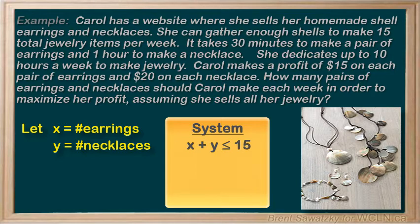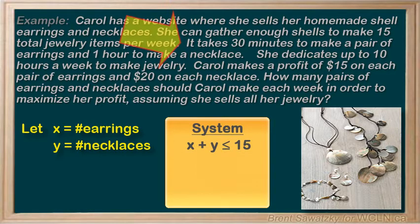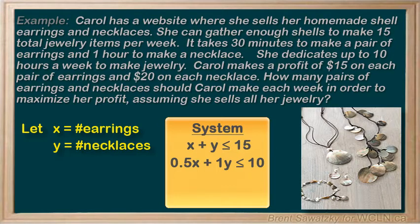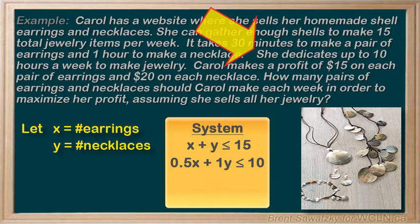We're also told that it takes 30 minutes to make a pair of earrings and one hour to make a necklace. The total time to make the earrings would be 0.5 hours times x, and the time for necklaces would be 1 hour times y, giving us 0.5x plus 1y. She commits 10 hours per week, so that total time has to be equal to or less than 10 hours. That's our second inequality.